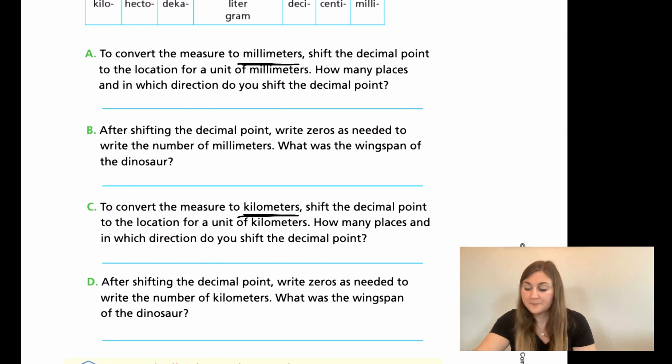And then for C, we're going to be doing the opposite. So to convert the measurement to kilometers, we're going to shift the decimal point to the location for a unit of kilometers. Same thing. So how many places and in which direction did you shift the decimal point? So again, start back to where it was in the picture and then move that decimal point until you get to the kilometers. So how many places did you move? And then in which direction? And then for D, after shifting the decimal point, write zeros in only the empty spaces and then tell me what that number would be. All right, go ahead and try these four questions and then come back and we will solve them together. Go ahead and hit pause here.